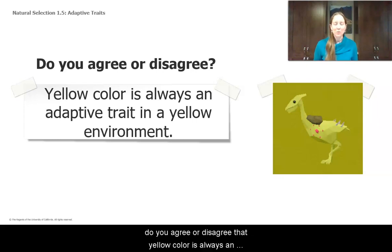So for our ostrilopes, do you agree or disagree that yellow color is always an adaptive trait in a yellow environment? Write down agree or disagree, or share with whoever you're sharing with.